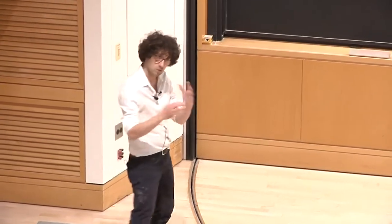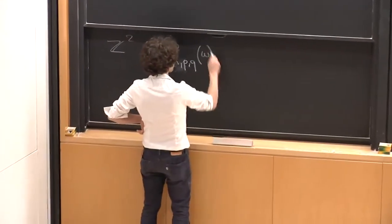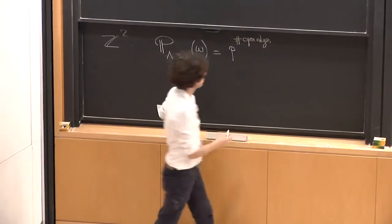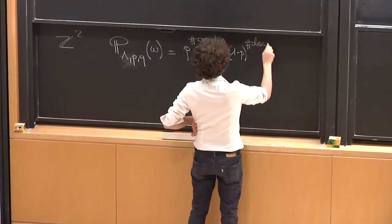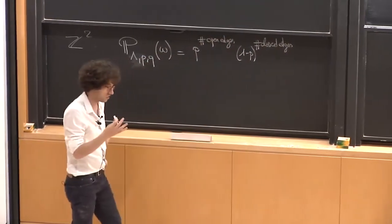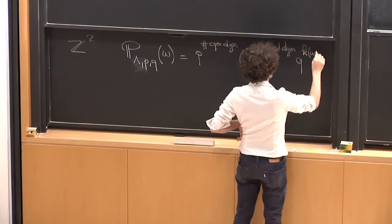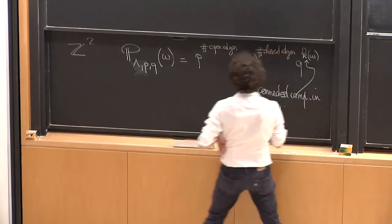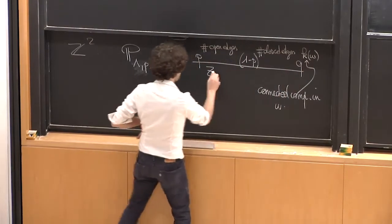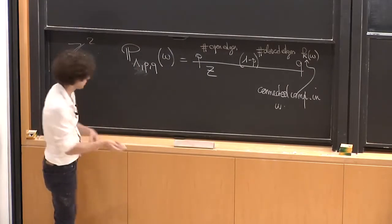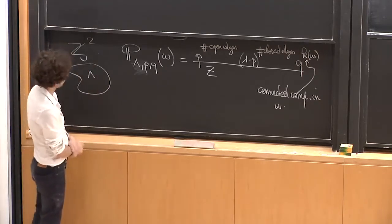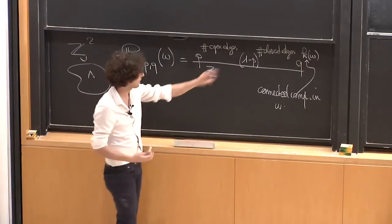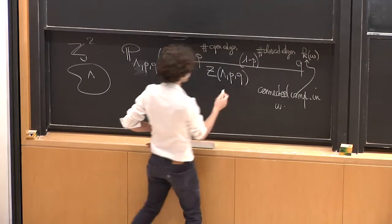I'm going to look at more general models beyond Bernoulli percolation. The probability of a configuration will be P to the number of open edges — edges with ω=1 — times (1−P) to the number of closed edges — edges with ω=0 — times Q to the number of connected components in ω. To be well defined, I need to renormalize, which is why I'm thinking first of a finite graph Λ, a finite part of Z².